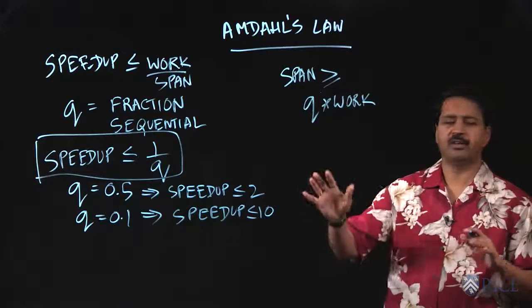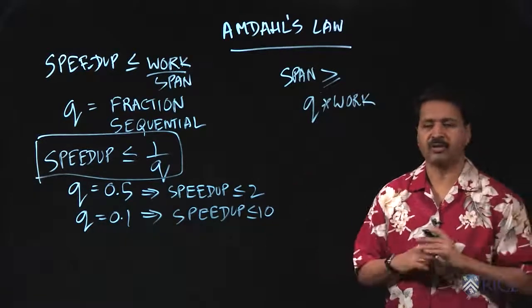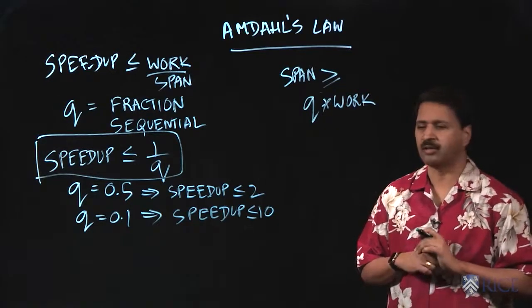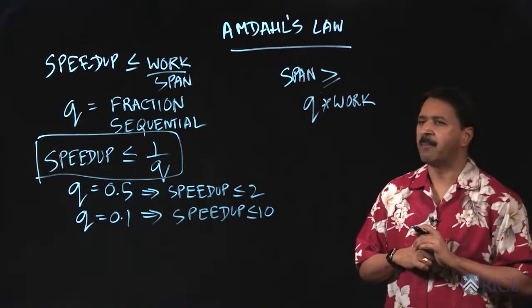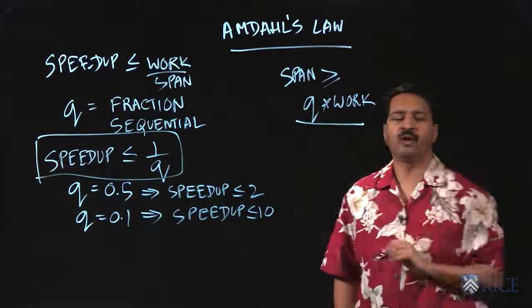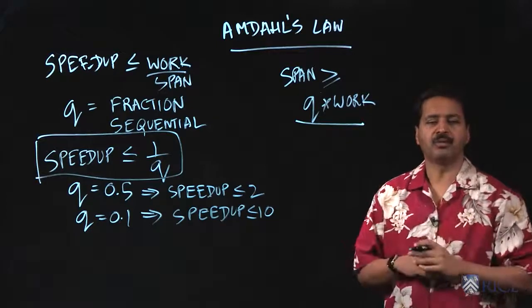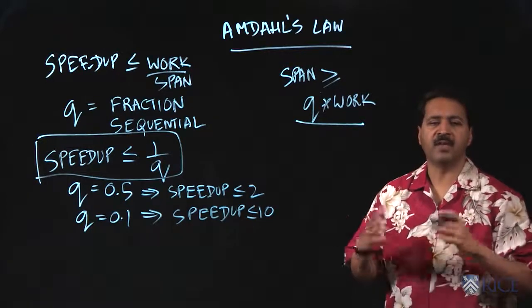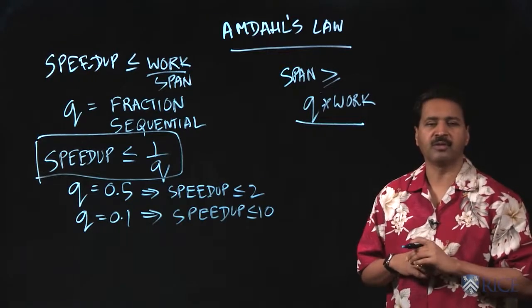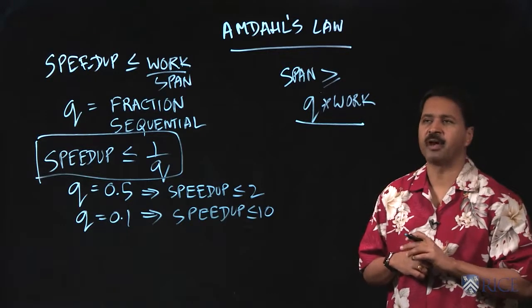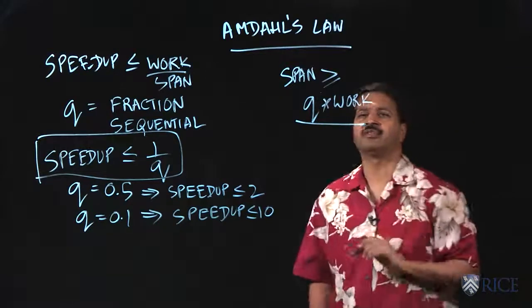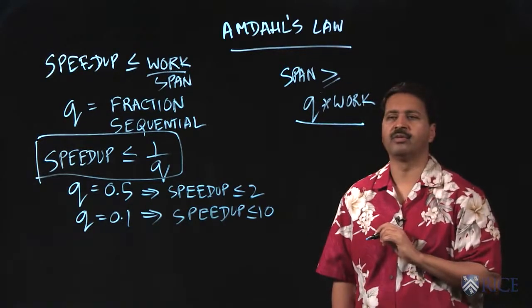So the idea here is that we don't know the computation graph, so we're not going to explicitly compute the span or the critical path length, but we know that a fraction q is sequential. So the product of q and work must be included in any path through the computation graph and, in particular, must be included in the longest path of the computation graph. So that's why the span is greater than equal to q times work.